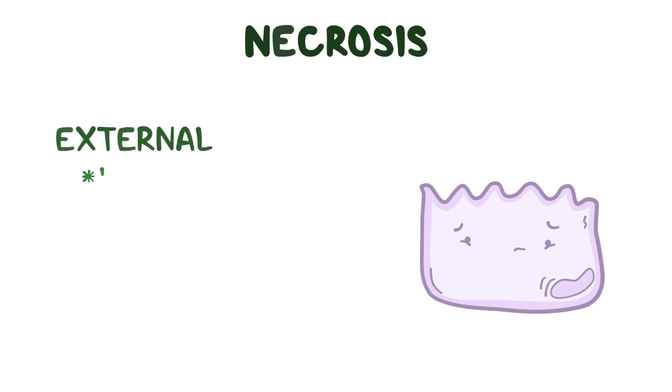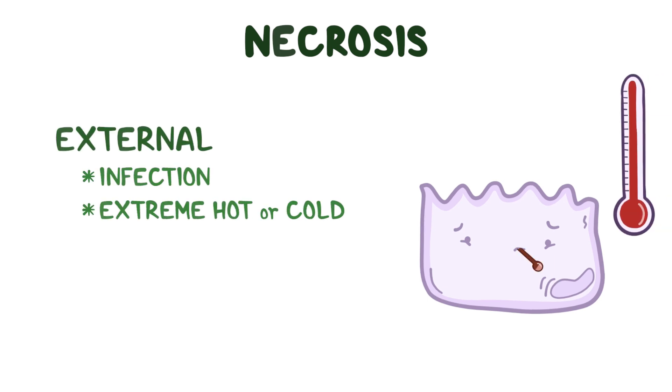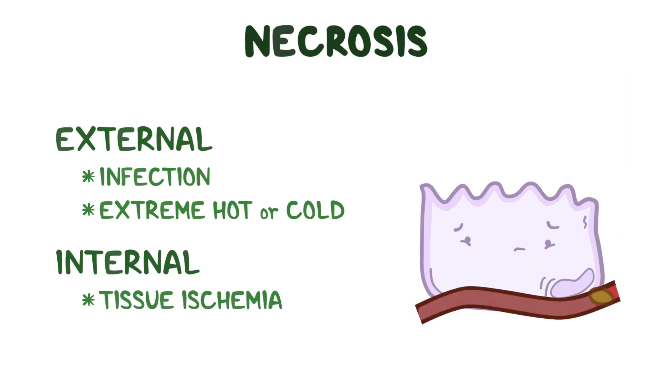Let's switch gears and take a look at necrosis, which can be triggered by external factors like an infection or extremely hot or cold temperatures, as well as internal factors like tissue ischemia. Now, there are three main types of necrosis called primary, secondary, and regulated necrosis.